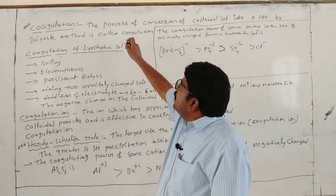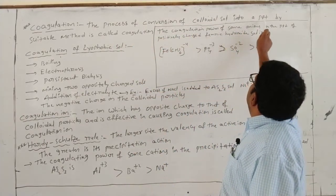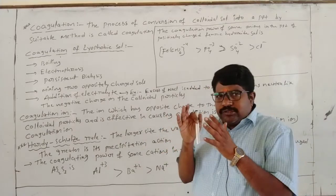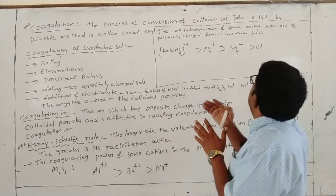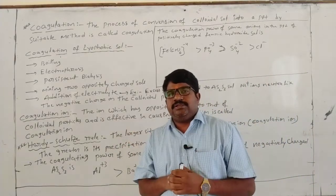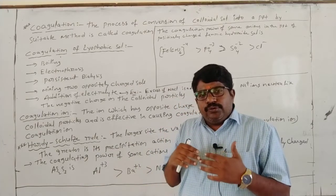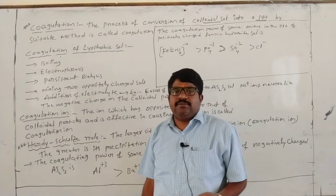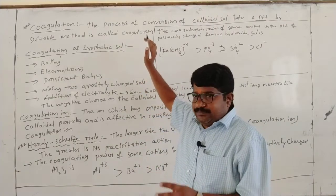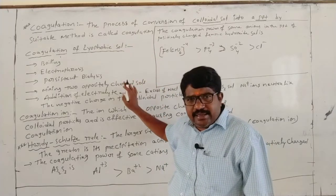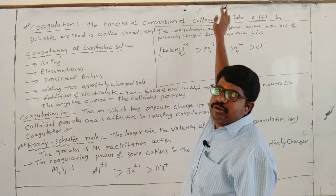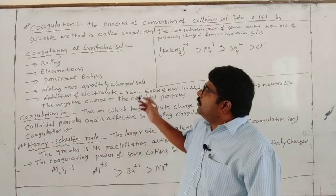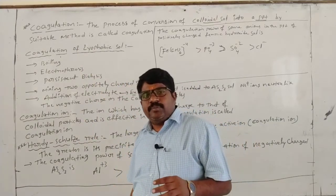Coagulation is the process of conversion of colloidal solution into precipitate by suitable methods. For example, a colloidal solution is converted into precipitate by suitable methods — that is called coagulation. Coagulation generally takes place in two types of salts.